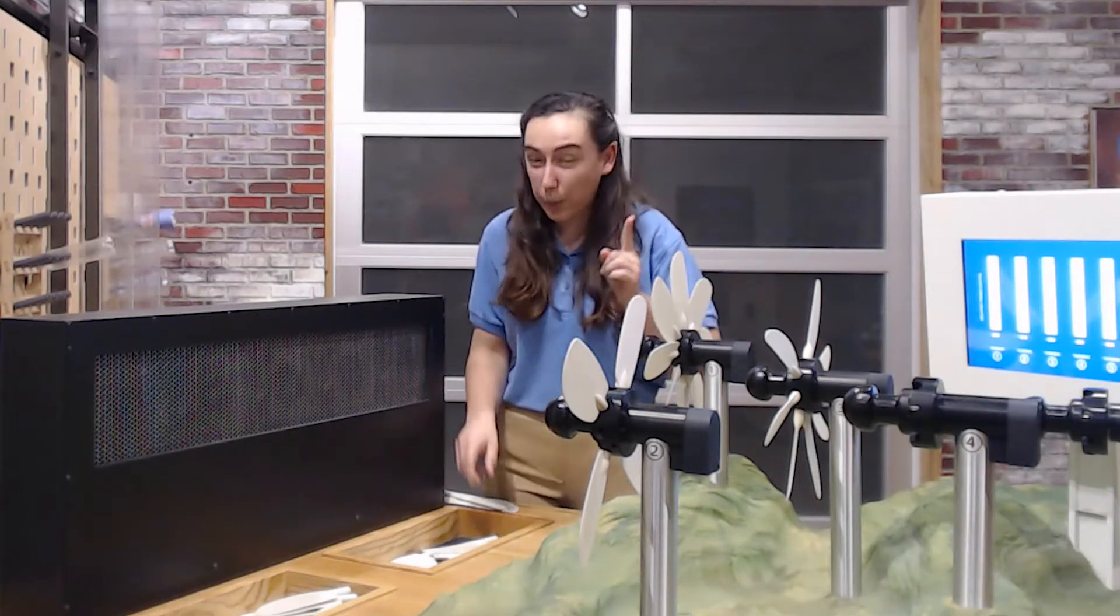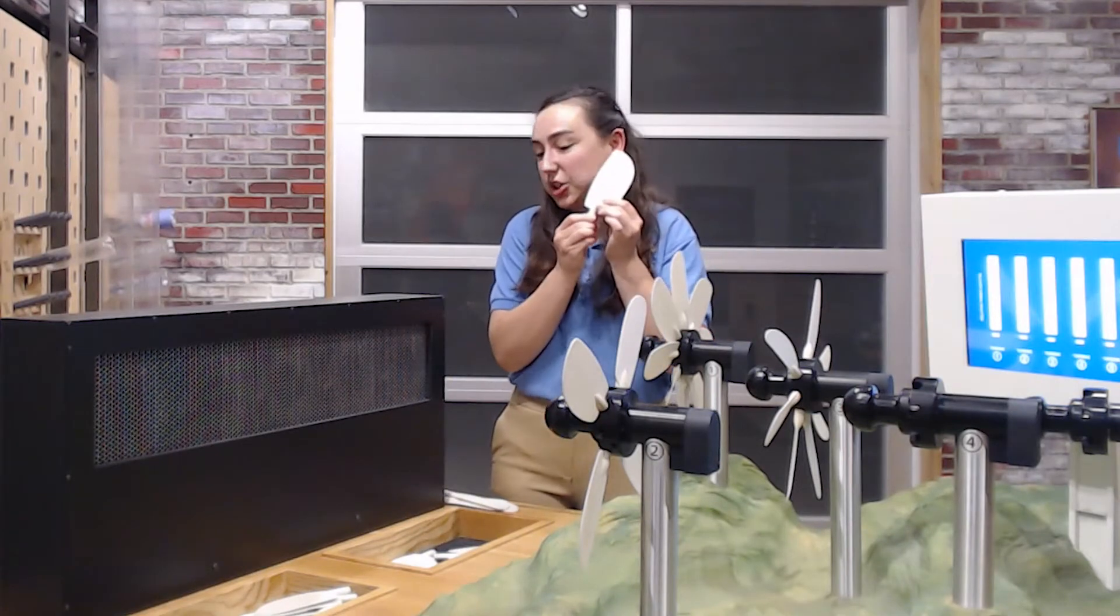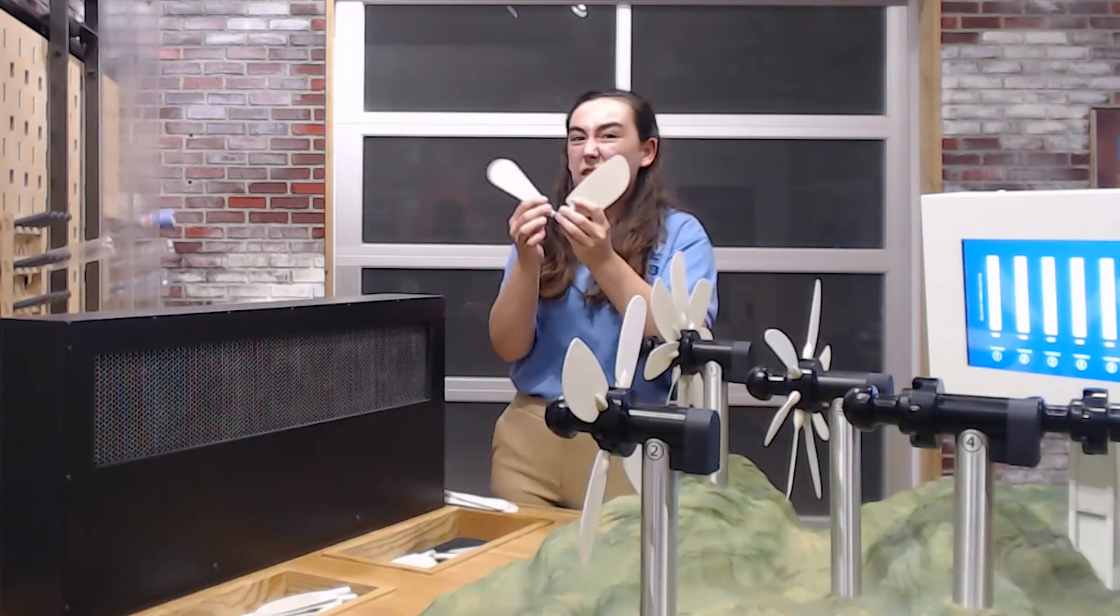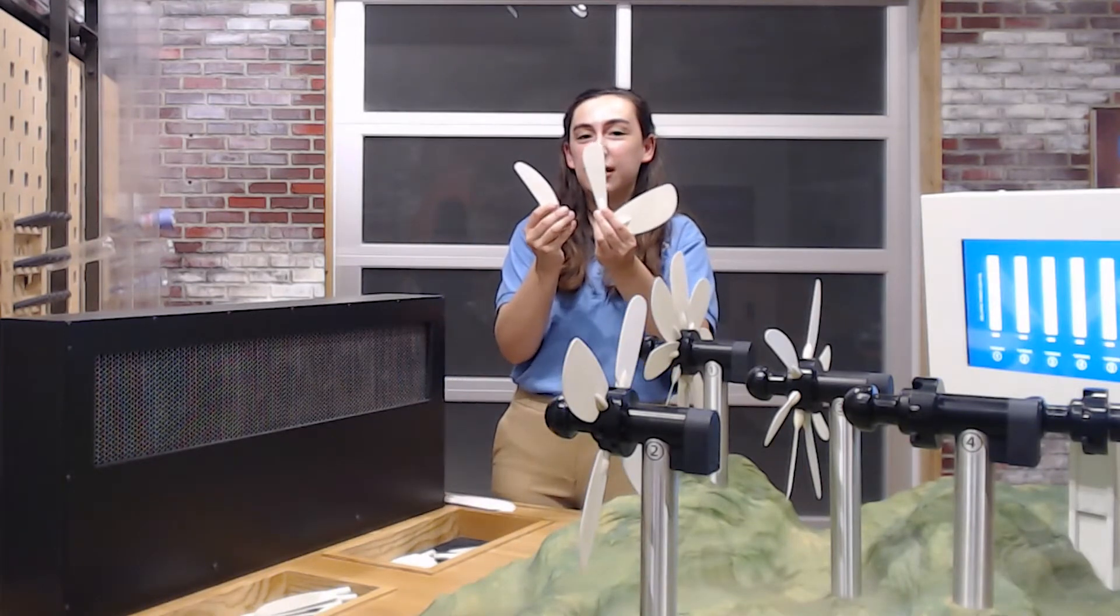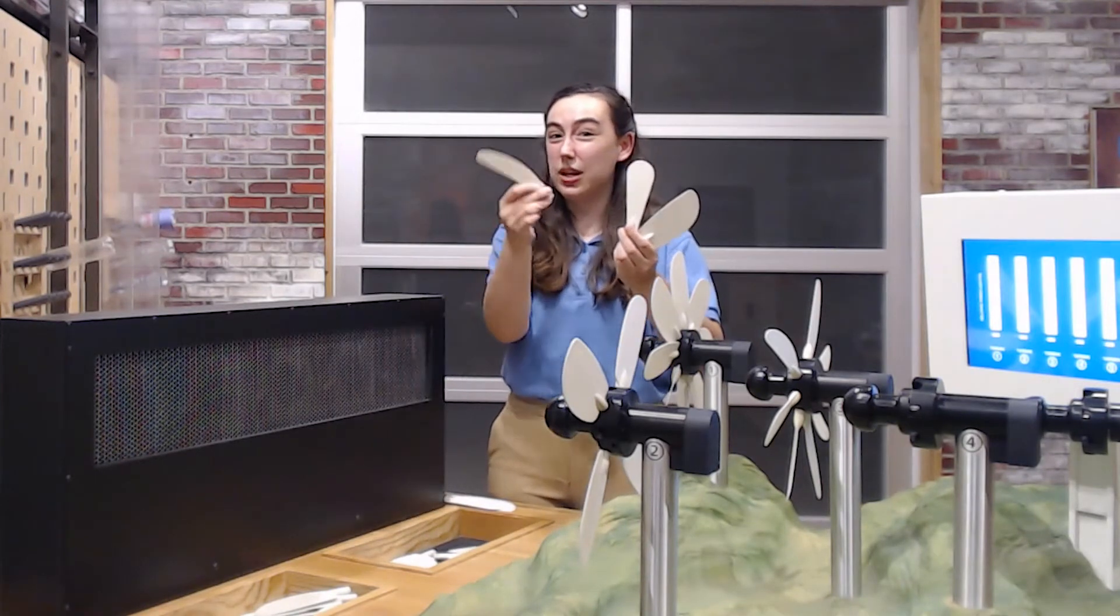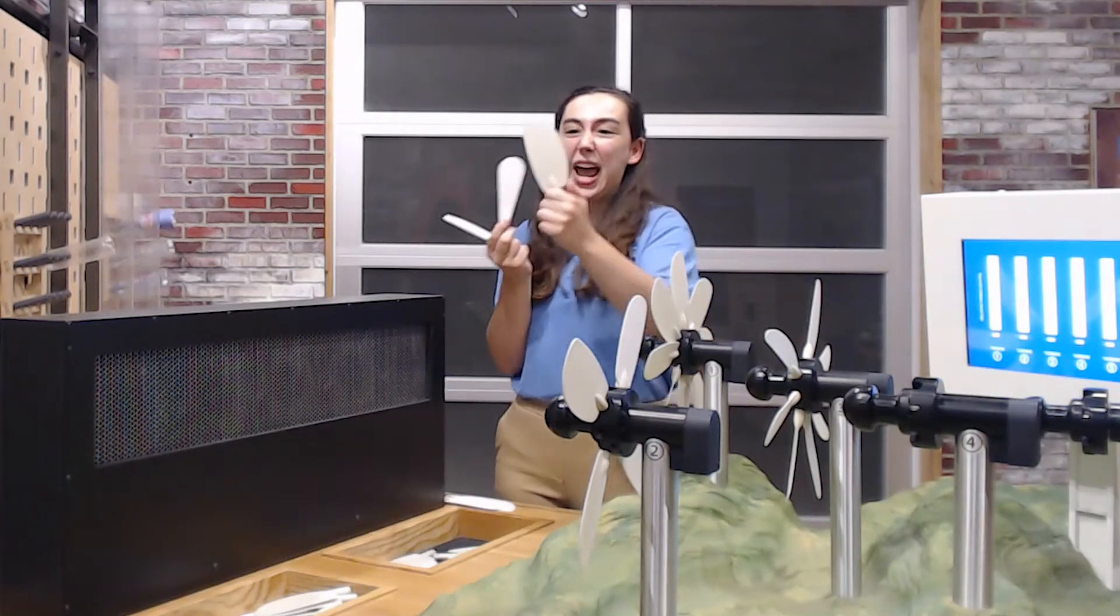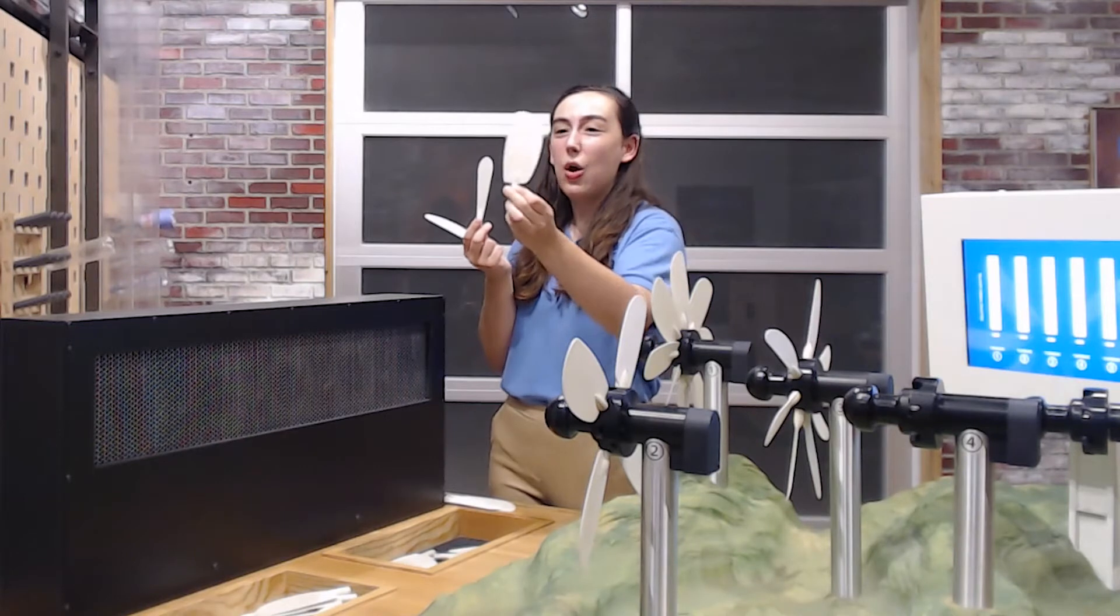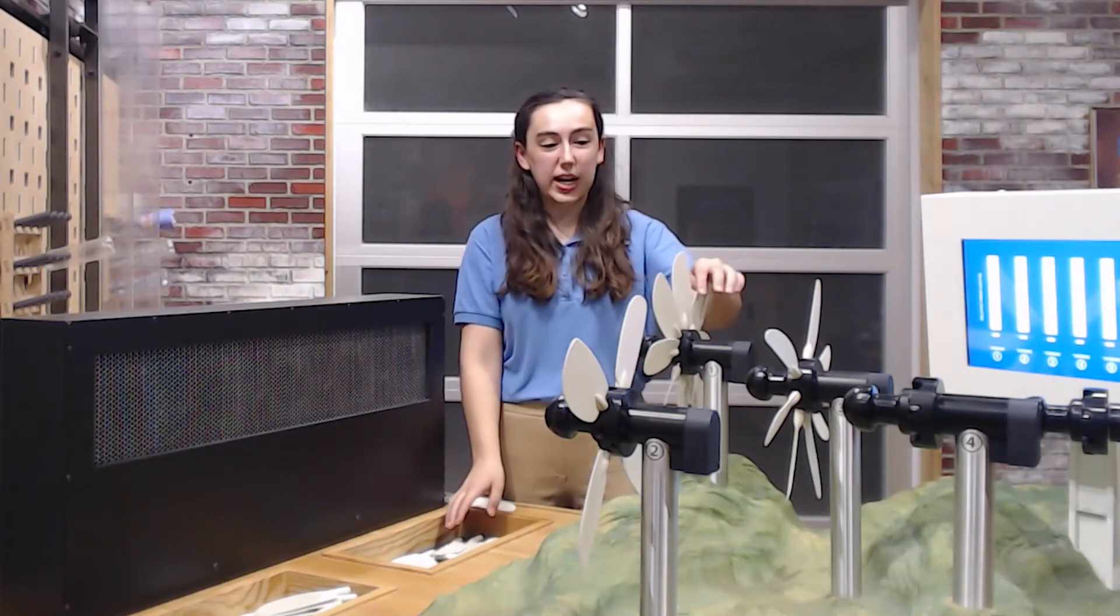And one of the factors that we are going to change today here in our experiment is we're going to change how the fins of the wind turbine look. So we have this skinny one, we have one that kind of looks like a canoe paddle, and we have this big wide one.